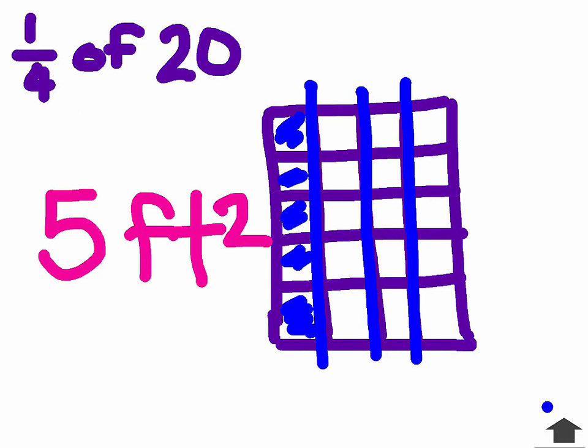And there is a total of five squares shaded in, which gets me back to my five feet squared. Sometimes, once again, counting up each one of those squares would take forever if you had, for example, ten thousand square feet to work with. So doing the math of one-fourth times twenty, which equals five, is going to be a faster route to take.